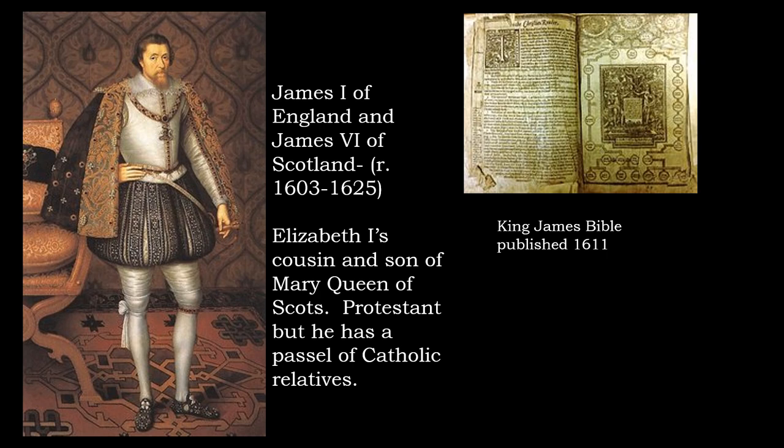James the First is the son of Mary Queen of Scots — who was executed — and as a provision of being made Elizabeth's heir, he had to be raised from childhood as a Protestant. He had to agree to rule as a Protestant in England, which is more complicated than it might seem because James comes from a family that is quite staunchly Catholic. He agreed to be Protestant in order to inherit both England and Scotland.